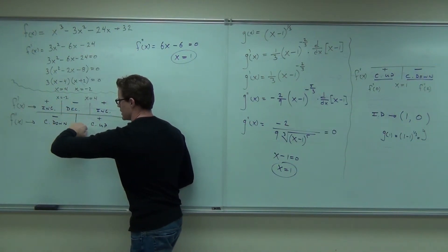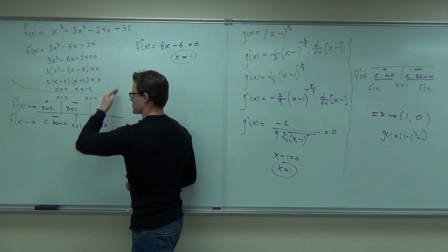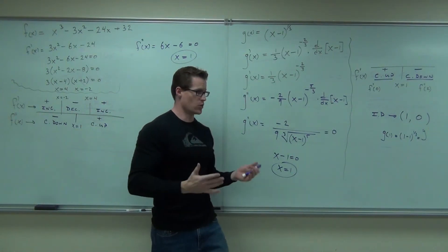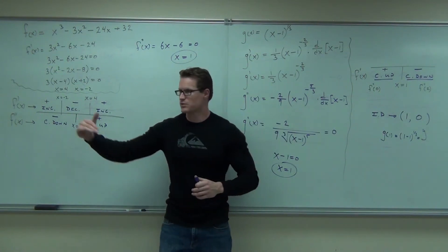Concave up, but still decreasing. And then concave up, increasing the rest of the way. That tells you not only whether you're going up or down, but how you're going up or down. It would be different if it was like this, right?